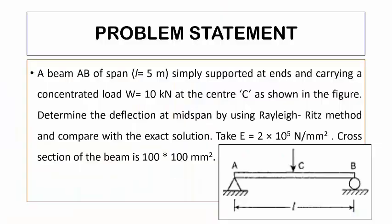A beam AB of span L equals 5 meters, simply supported at ends and carrying a concentrated load W equals 10 kN at the center C as shown in the figure.